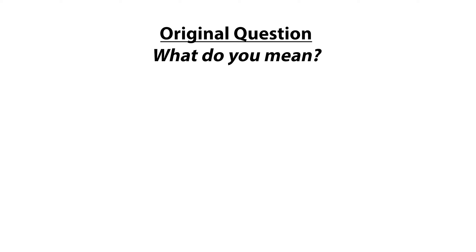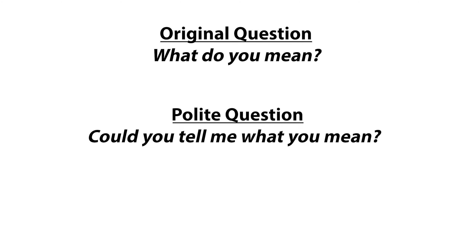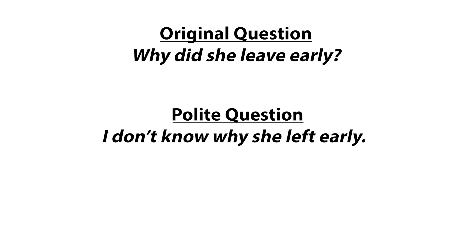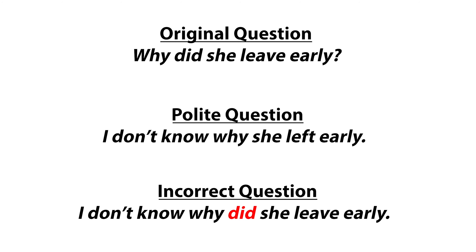The second example: 'What do you mean?' This changes to 'Could you tell me what you mean?' — not 'Could you tell me what do you mean?' And the third example: 'Why did she leave early?' You could change this to 'I don't know why she left early' — not 'I don't know why did she leave early.' In each example, the verb 'do', 'does', or 'did' is not included in the more polite form, so don't forget this, otherwise it may just sound a little unnatural or unsuitable.